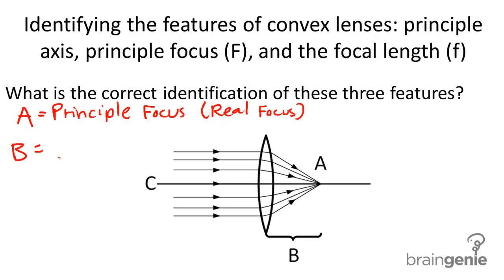B, characteristic B, is the distance between the principal focus and the center of the lens. So we call this the focal length.